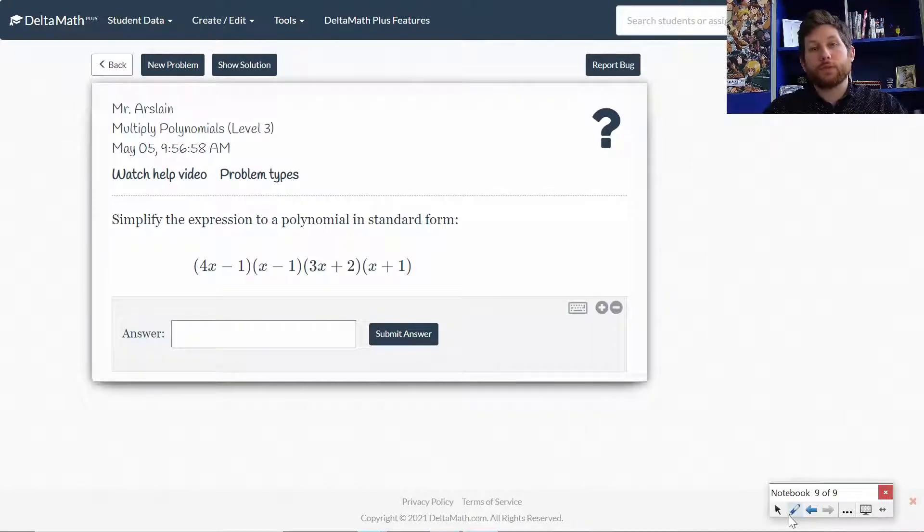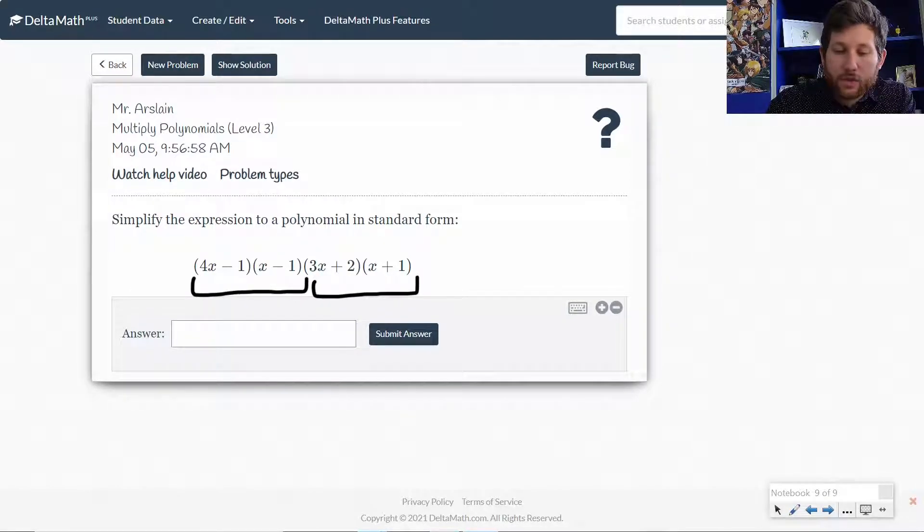okay, and we need to multiply them together. Now here's how I would do it. There's multiple ways to do this. How I would do it would be I would multiply these first two binomials together, and I'd multiply these second two binomials together.